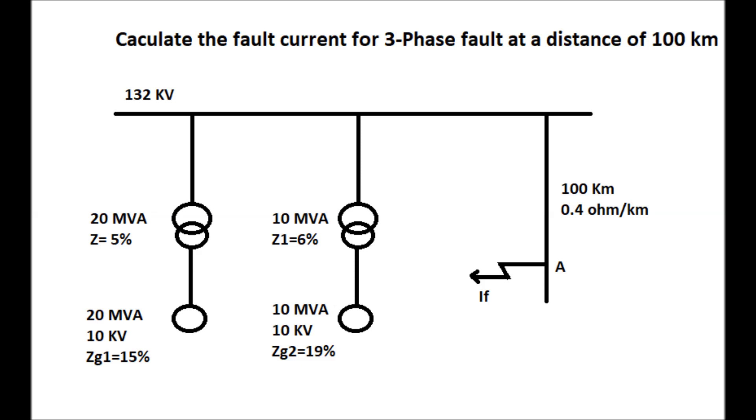The resistance of the line is 0.4 ohm per kilometer. We have to calculate the three-phase fault current.